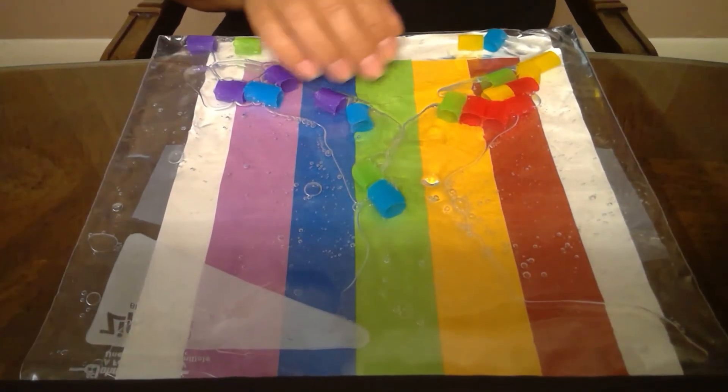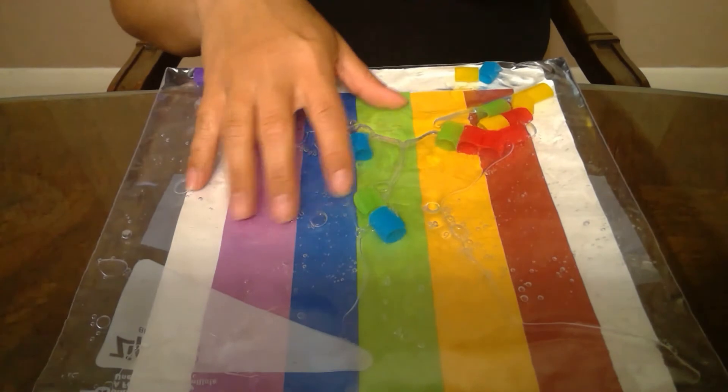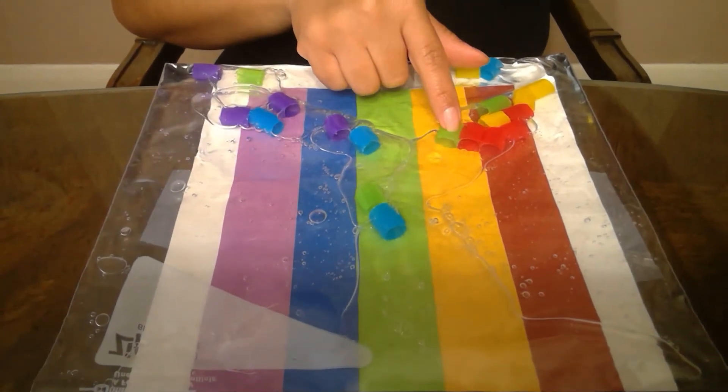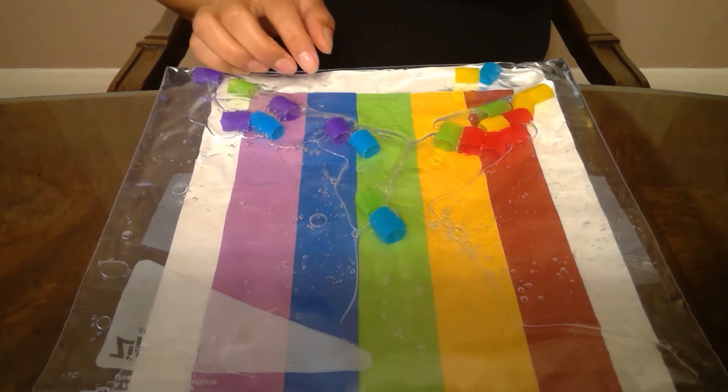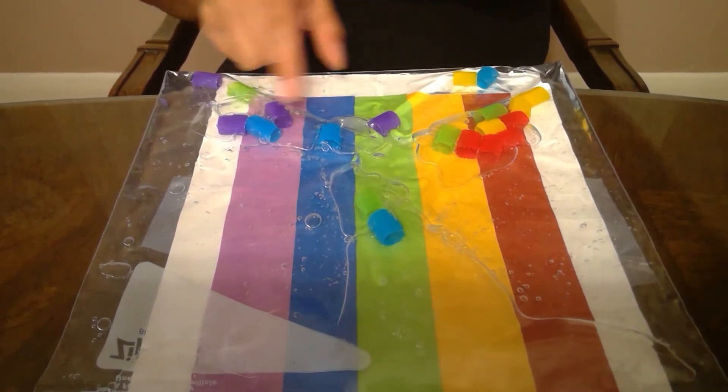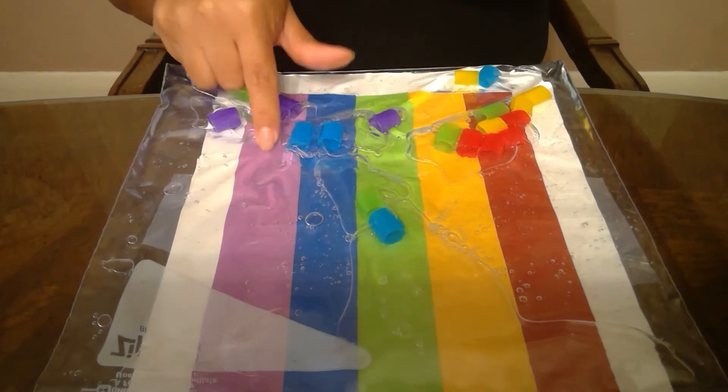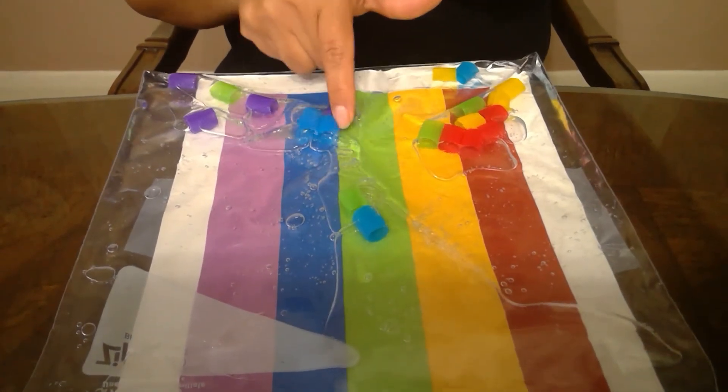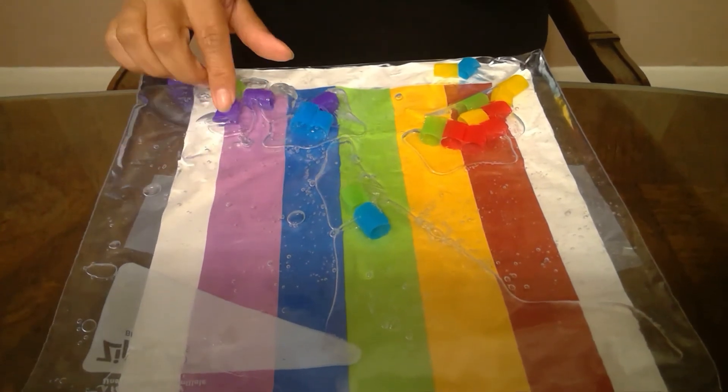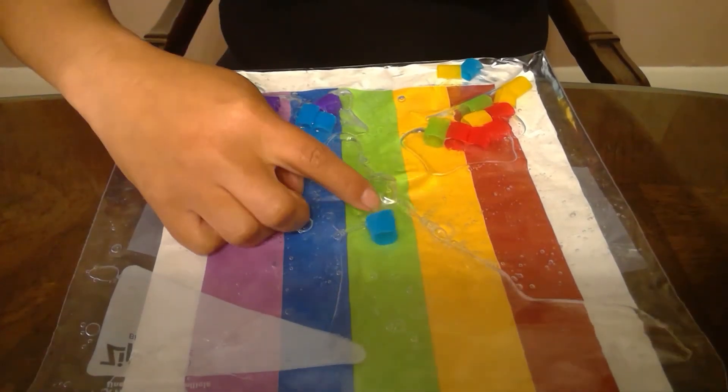Once you have your bag assembled with the gel, the cut-up straws, and your colored background, you can have your student or your child move around the different colors, the different pieces, to whichever color they match with.